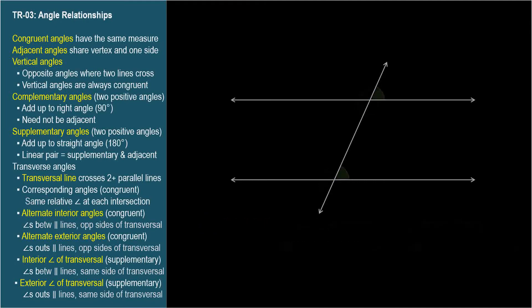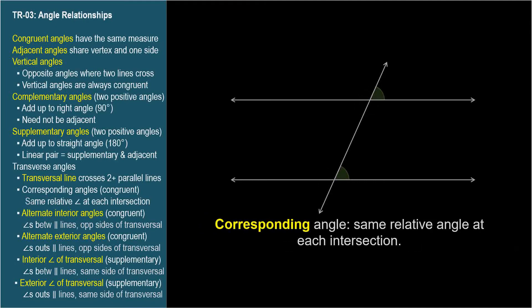Each angle has a corresponding angle at the other intersection. Corresponding angles are in the same relative location at each intersection point. Corresponding angles are congruent.